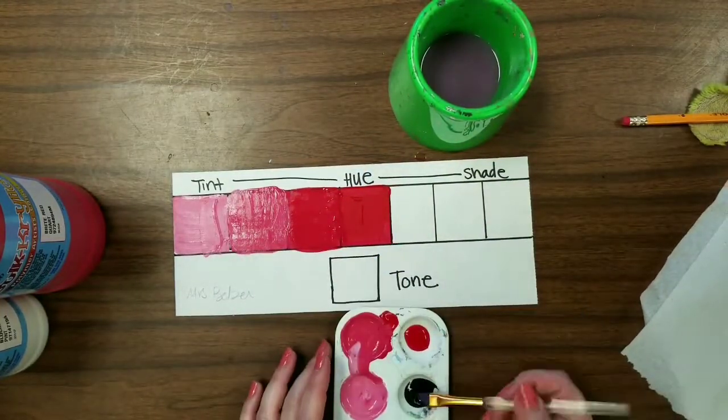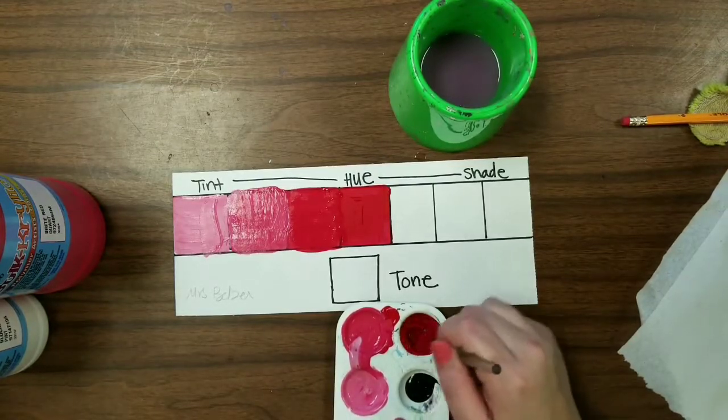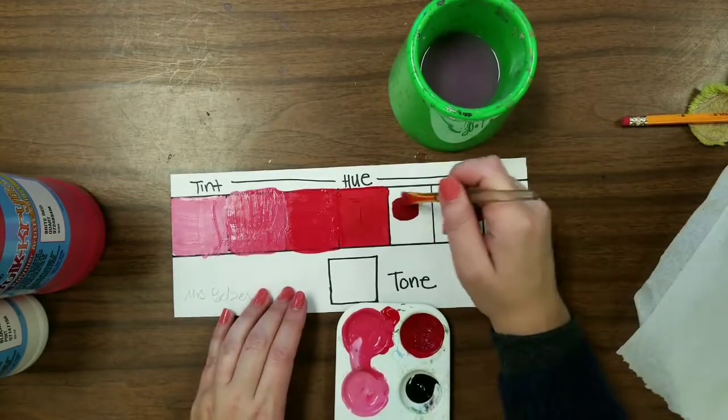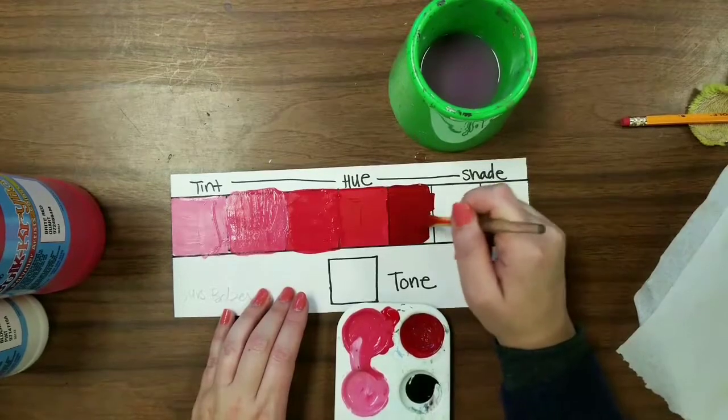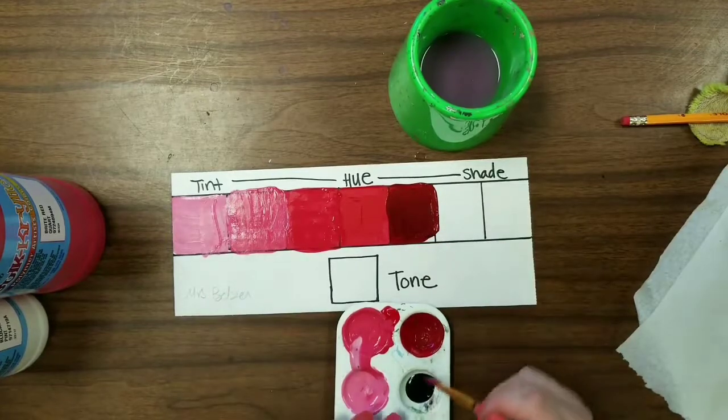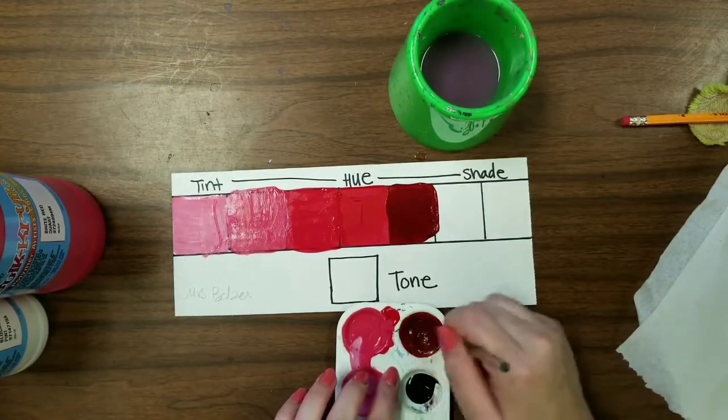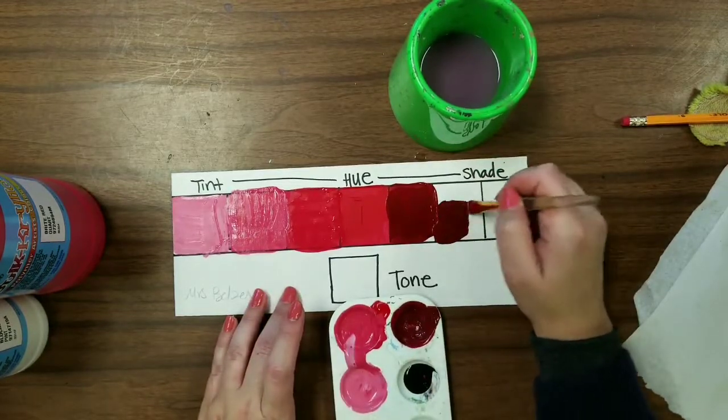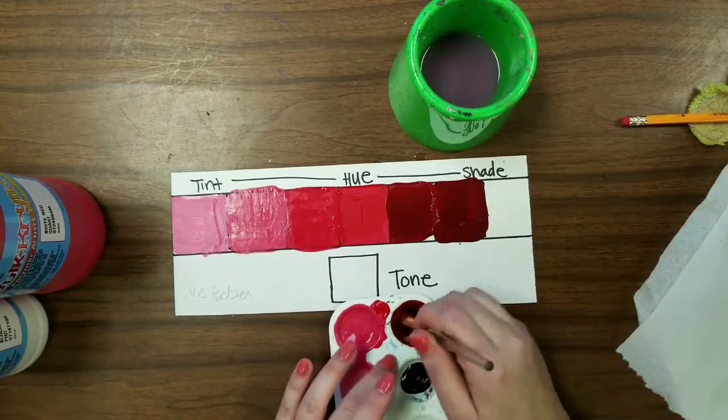The shade is the same thing. So grabbing, just start with small amounts. The black is going to work a little bit better than the white. So you want to be careful not to add too much black too fast. So already that's a big change compared to the tint side. So get a little bit more, and then a little bit more.